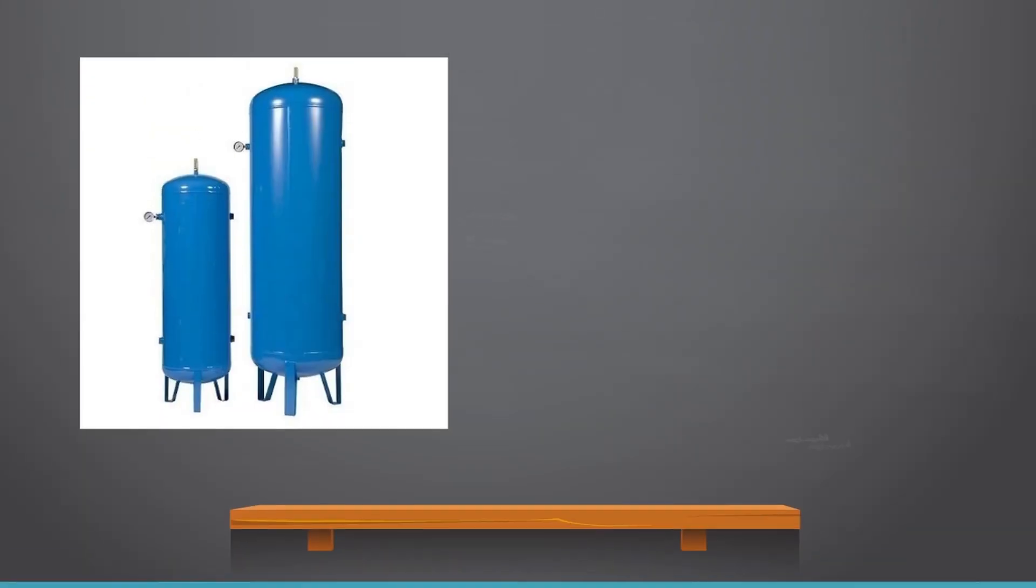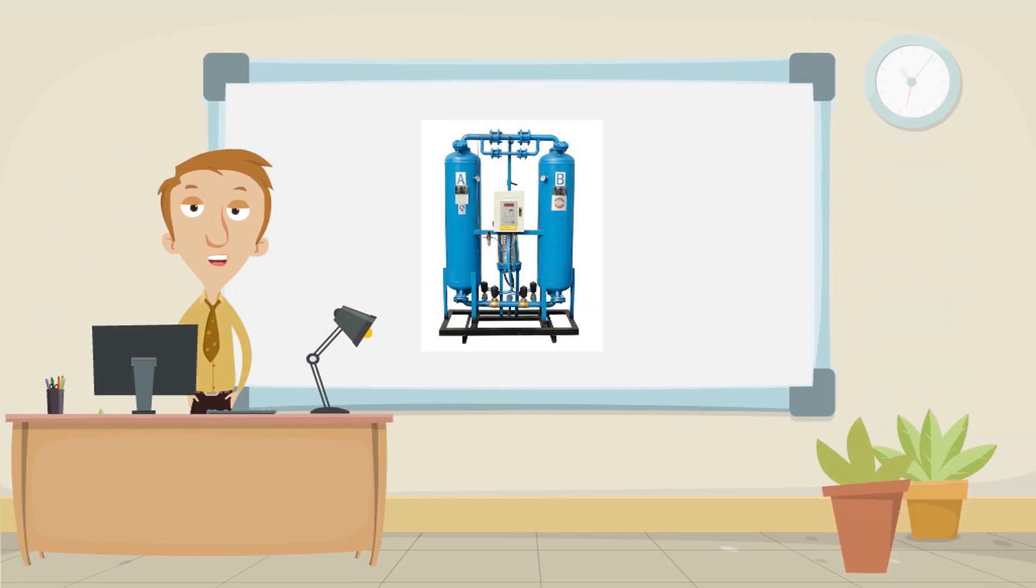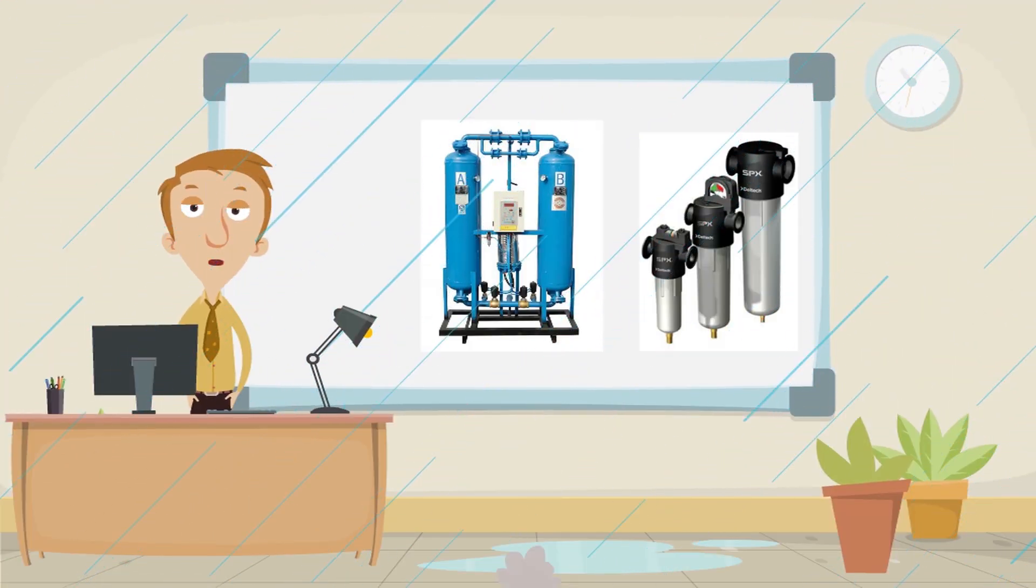Receivers are used to store compressed air and limit demand on the compressor. Dryers and filters are used to reduce moisture content and contaminants in the air system.